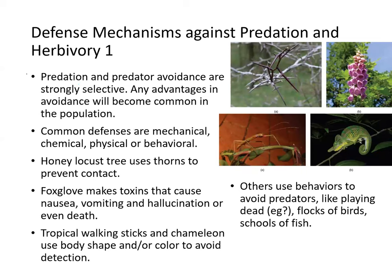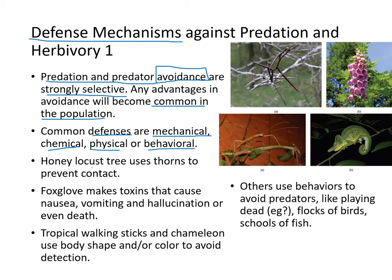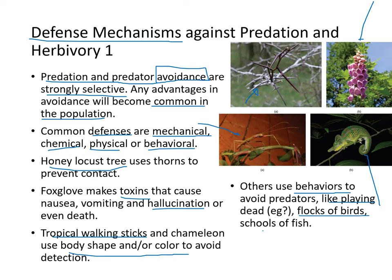Many organisms have developed defense mechanisms against predation, which is a very strong selective pressure. Common defenses are mechanical, chemical, physical, or behavioral. The honey locust tree uses sharp thorns to prevent being eaten. The foxglove makes toxins that cause nausea, vomiting, hallucination, or death. Tropical walking sticks and chameleons use body shapes and color for camouflage. Others use behaviors like playing dead, flocking, or schooling in fish to confuse predators.